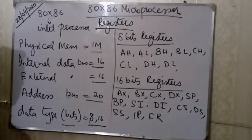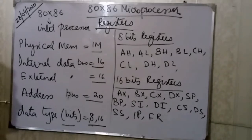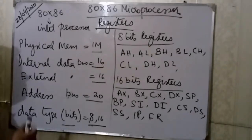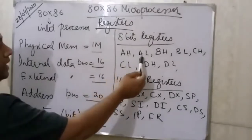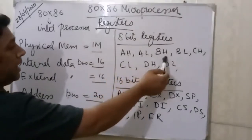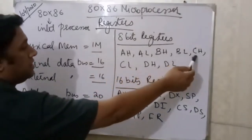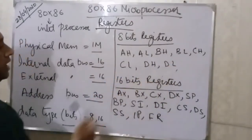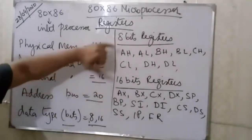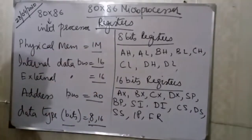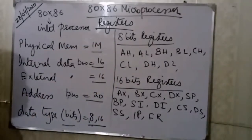The most important thing is the key registers. For the 8-bit registers, you can see: AH, AL, BH, BL, CH, CL, DH, DL. These are the 8-bit registers. I will go into detail with the registers later.